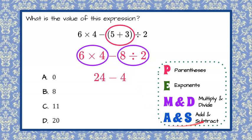And our last thing to do is to add or subtract, and we have a subtract. 24 subtract 4 is 20. So the correct answer choice for this problem is D, 20.